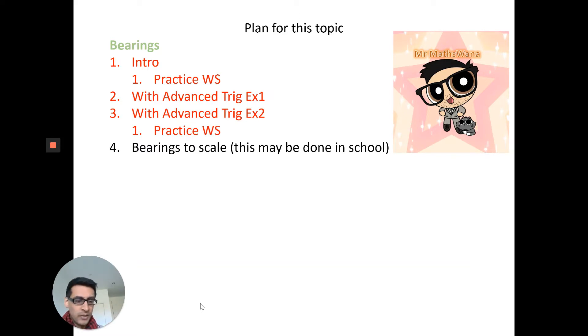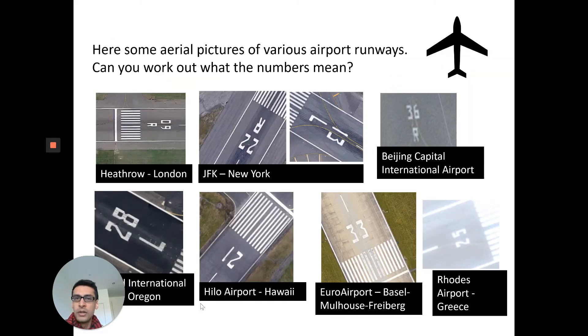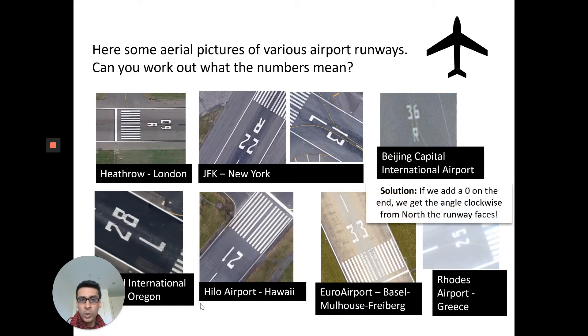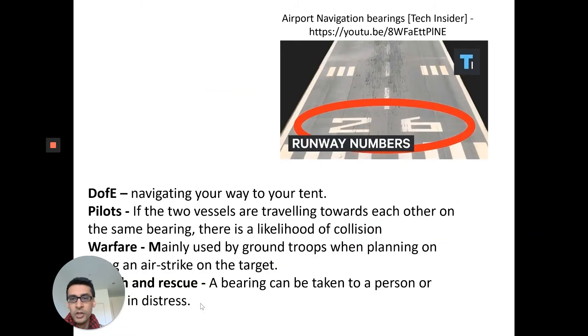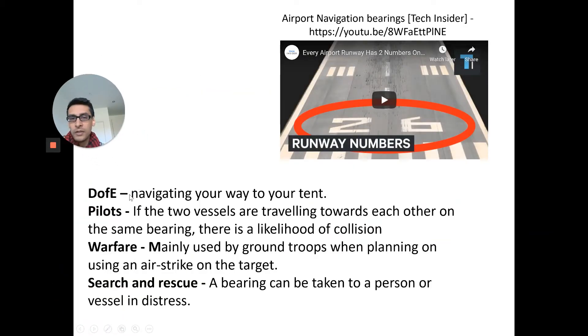So here are some aerial pictures of various airports. Can you work out what the numbers are? You probably just instinctively figured it's something to do with angles, and you'd be right. It's actually if you add a zero on the end, you get the clockwise angle from north that the runway faces. It is a form of bearing. Other examples: you may have used them when navigating to your campsite, pilots use them in the sky, used in war for planning targets, search and rescue, and ships use them because they can't use roads to navigate.